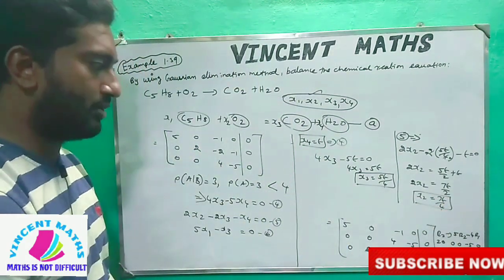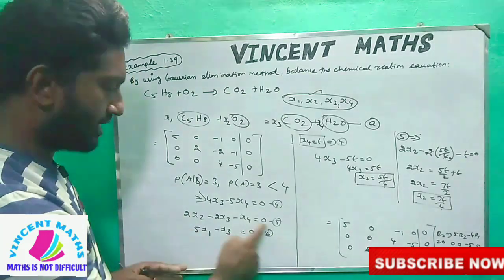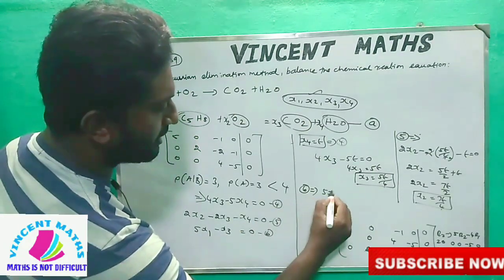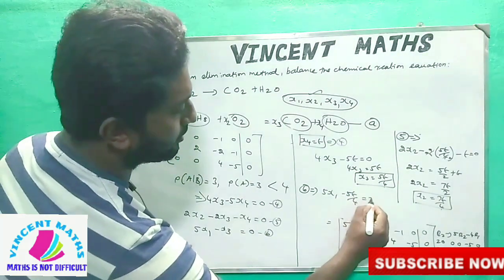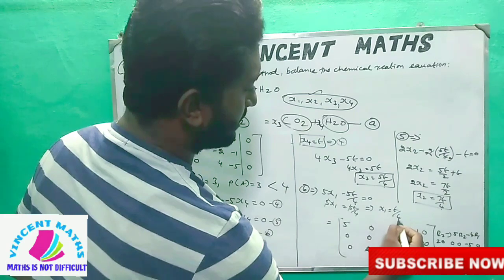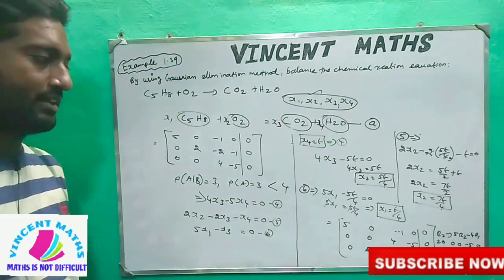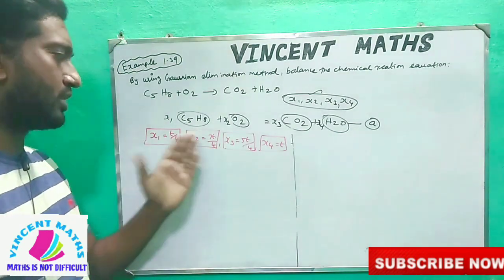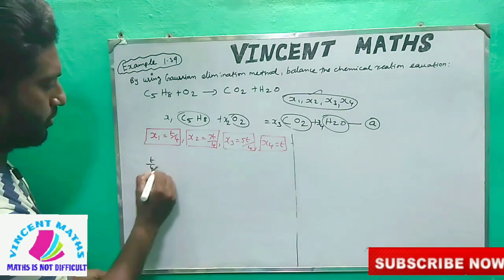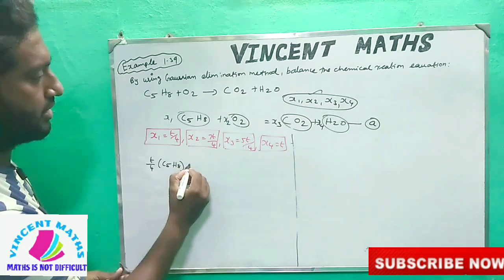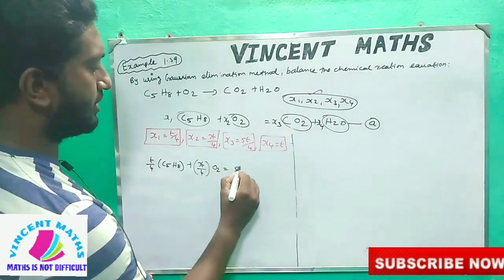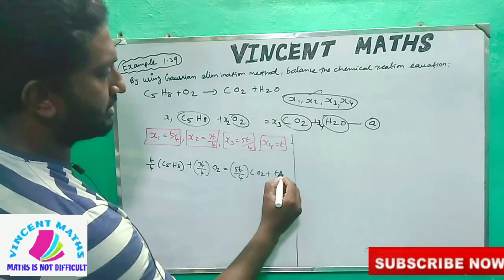This is x2 value. Now, if we get x1 value — from equation 1, that is 5x1 minus x3 equals 0, substituting x3 value: 5x1 minus 5t by 4 equals 0. Then 5x1 equals 5t by 4. The 5s cancel, and we get x1 value equals t by 4. So we get x1 equals t by 4. Now friends, if we get x1, x2, x3, x4 values: x1 equals t by 4, x2 equals 7t by 4, x3 equals 5t by 4, and x4 equals t.